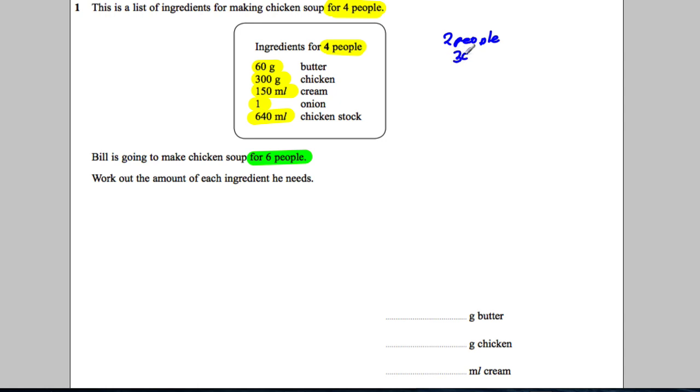So it would be 30 grams, 150 grams of chicken, 75 millilitres of cream, half an onion, and 640 divided by 2, which is 320 millilitres.